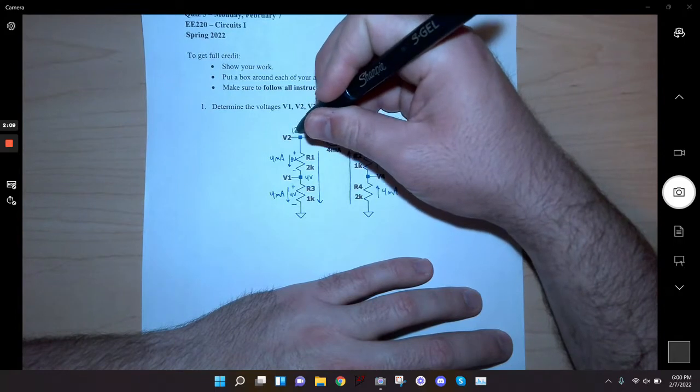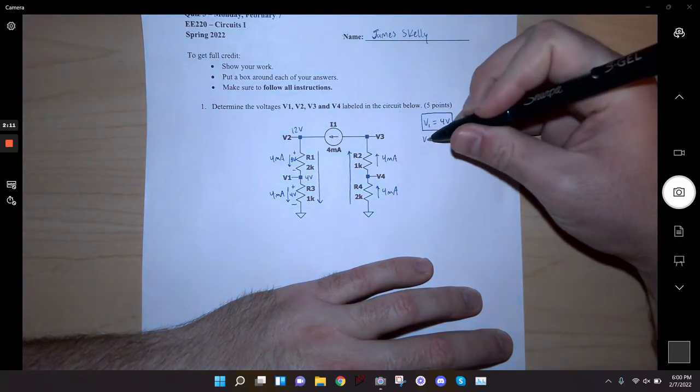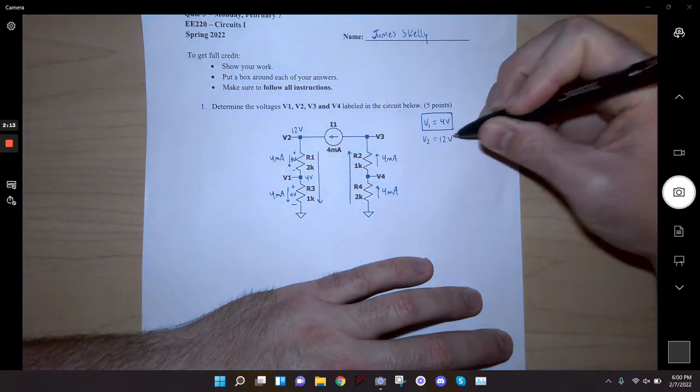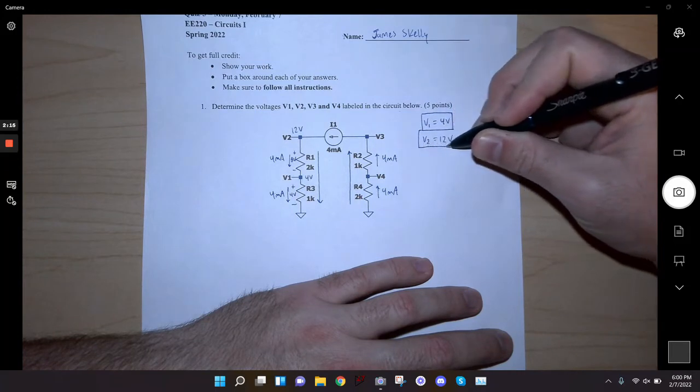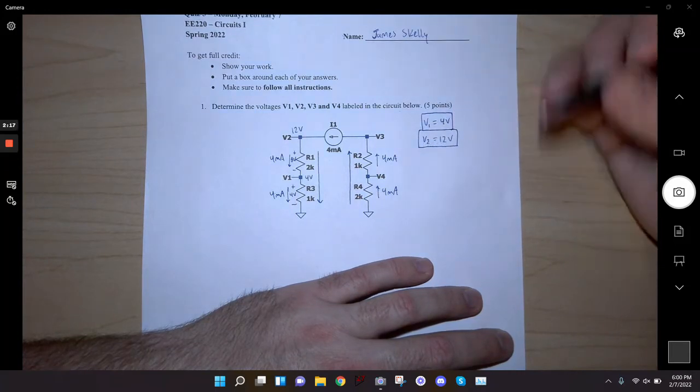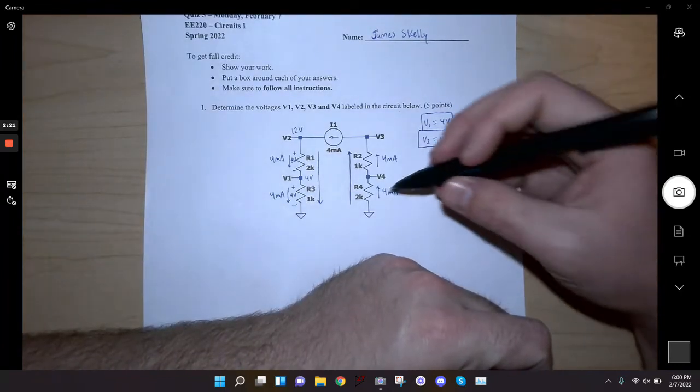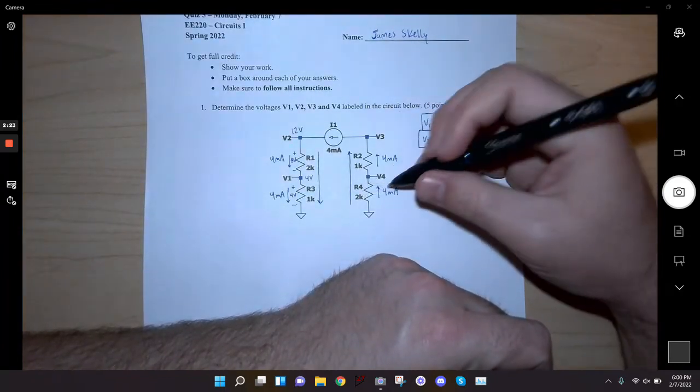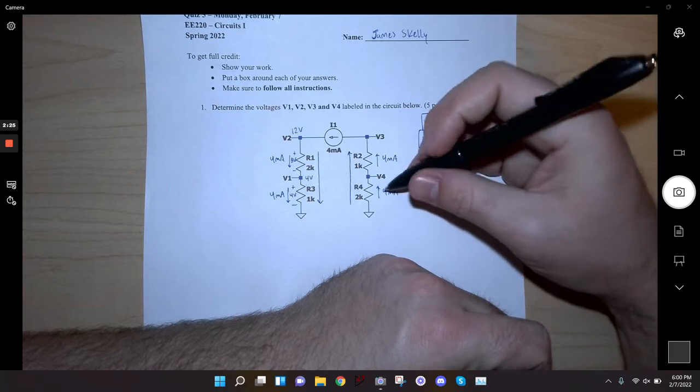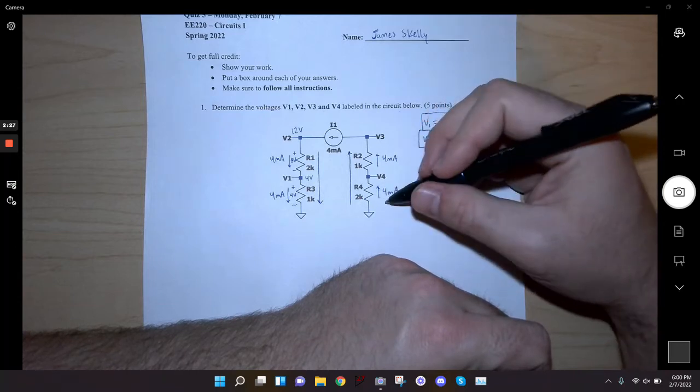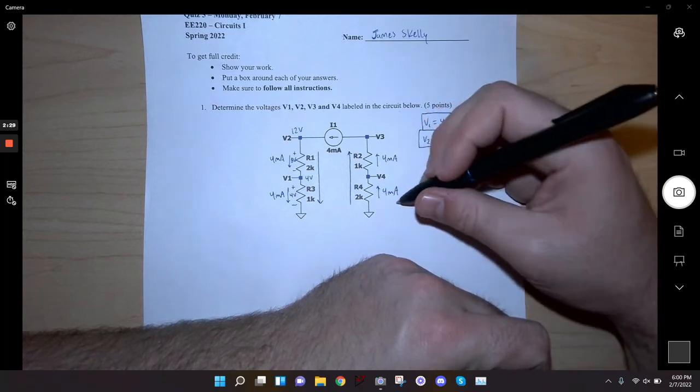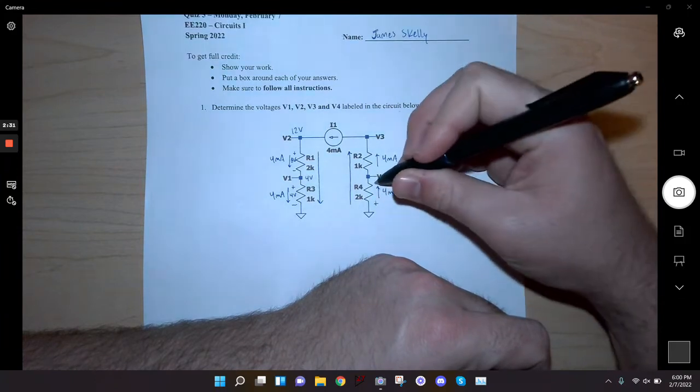So that means that moving up from this 4 volts, my drop across this resistor is 8, so that makes this 12 volts. So v2 is 12 volts. Now on this other side across this R4, we've got 4 milliamps times 2k, and my current's flowing from ground up.